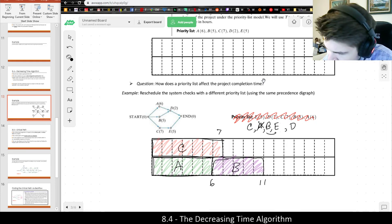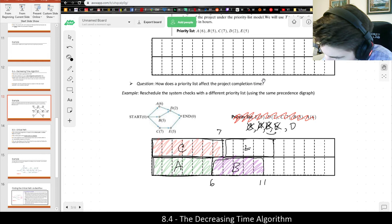Next up will be C is now completed. B is still in progress. E is next on my priority list, which is ready. So we can go ahead and do that. E for five, one, two, three, four, five, E. Should put me at 12.